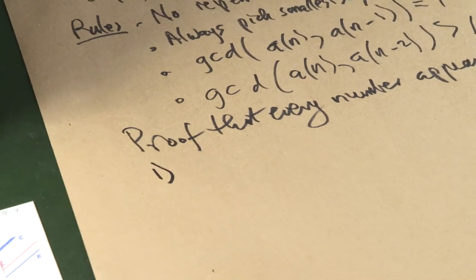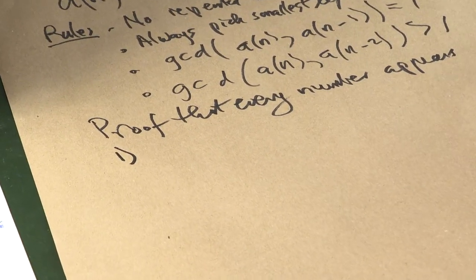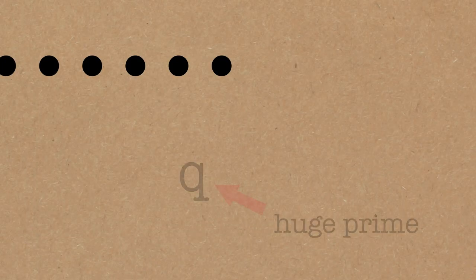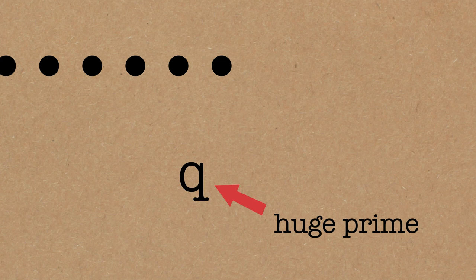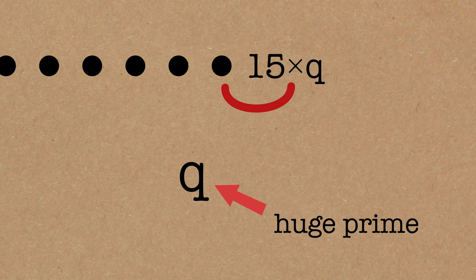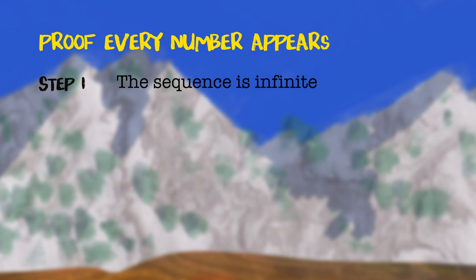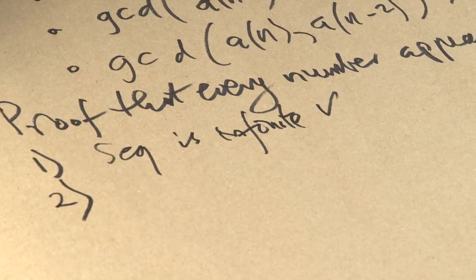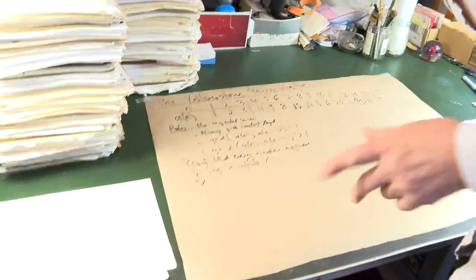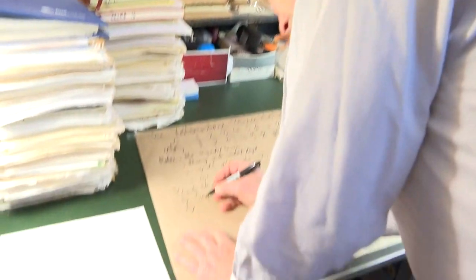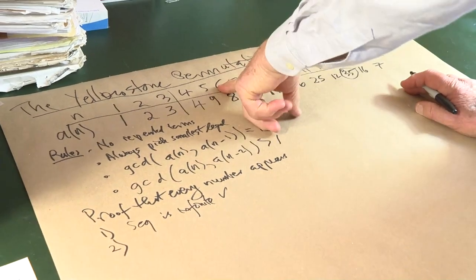Step number one: First of all, the sequence is infinite. Because you might think after a while we run out of numbers. But in fact, there's always a candidate. We could pick some giant prime that hasn't appeared yet, call it q, and take 15 times q. That's definitely going to be relatively prime to the previous term, and certainly it has a common factor with the two back. So there's always a candidate. So the sequence is infinite.